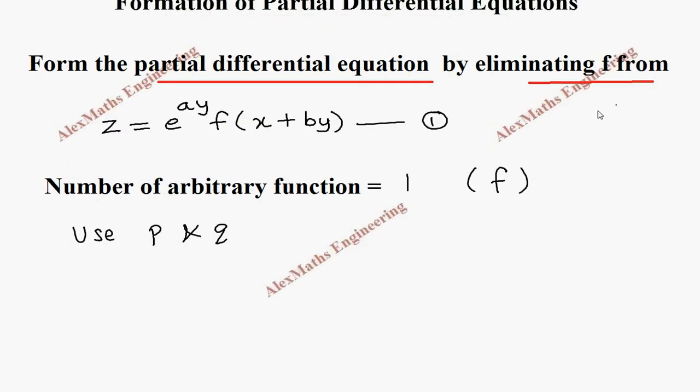We are going to differentiate this one partially with respect to x, so that will be ∂z/∂x. This first term is purely constant because it is in terms of y. When we do partial derivative with respect to x, the y term is treated as a constant. This constant is written as it is.